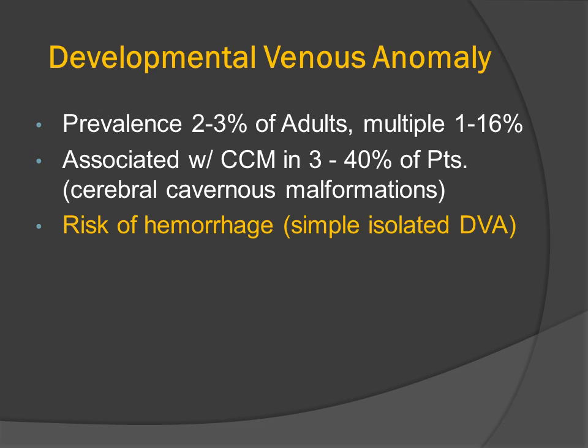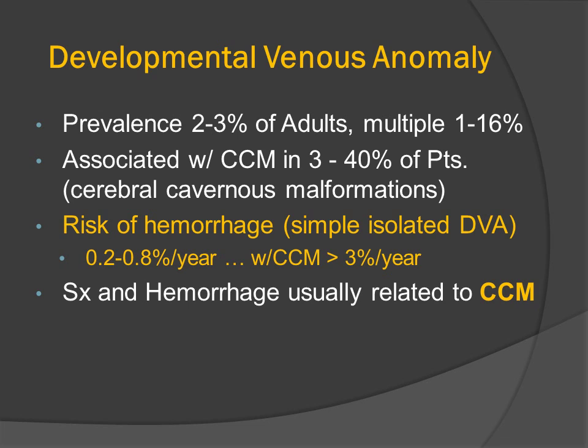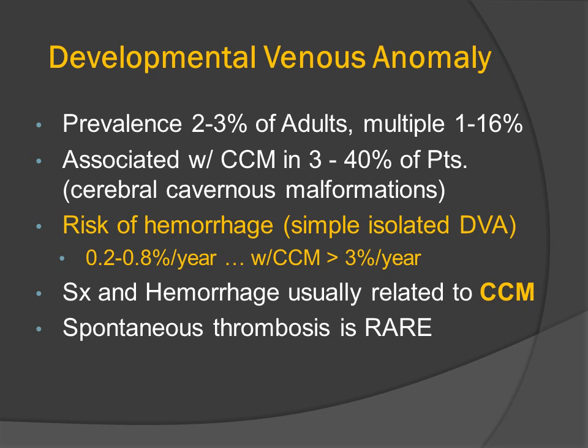The risk of hemorrhage in a simple and isolated DVA is probably less than 1% per year. But with an associated cerebral cavernous malformation it is probably much higher and approximates the rate of hemorrhage of isolated cerebral cavernous malformations, which is greater than 3% per patient per year. The symptoms of the hemorrhage are usually related to the CCM and not to the DVA.